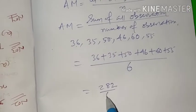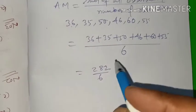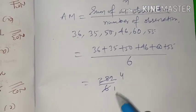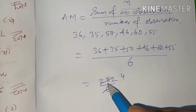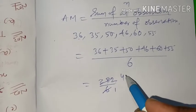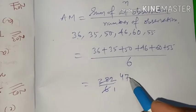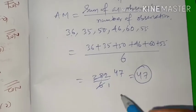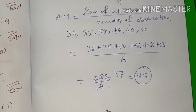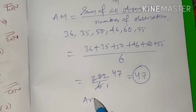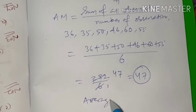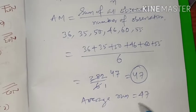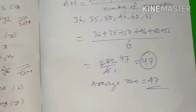Adding all the numbers gives 282 divided by 6. Cancelling, we get 47. So the average run score of the batsman is equal to 47. In this way you can find the mean of a set of observations.